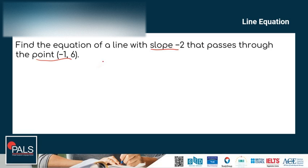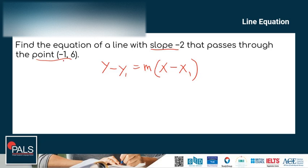The point-slope formula is: y minus y₁ equals m times (x minus x₁). Here, m represents the slope, and y₁ and x₁ come from the given coordinate point — so this one is x, and this one is y.